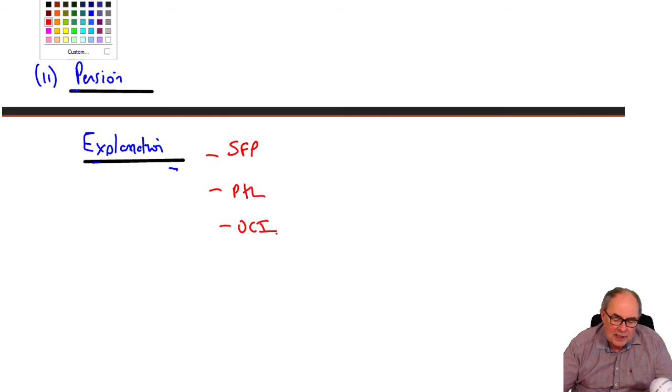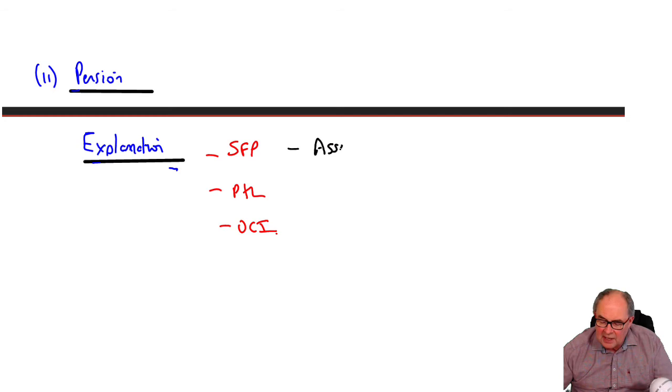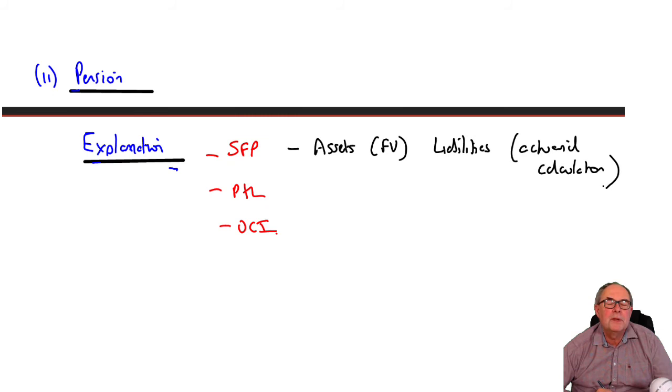Remember, in the SOFP we recognize the pension assets at fair value, and the pension liabilities, which is an actuarial calculation. Actuaries, as you know, are very wise people with brains the size of eight watermelons. We don't have to do the calculation. We just have to notice that they do it.